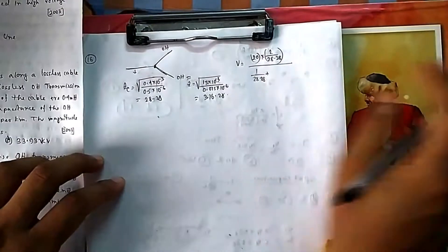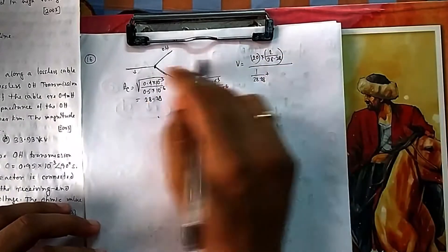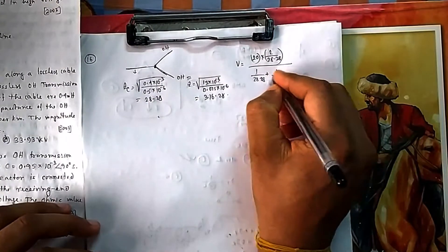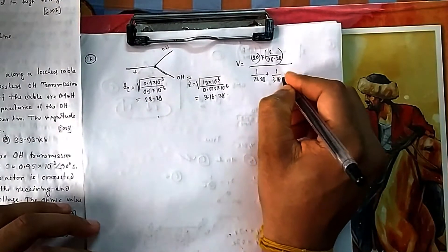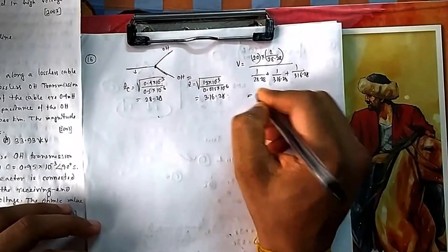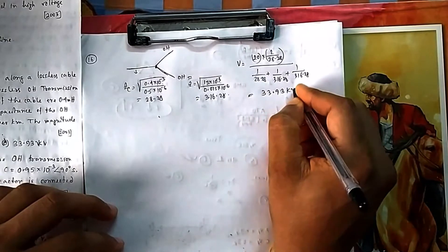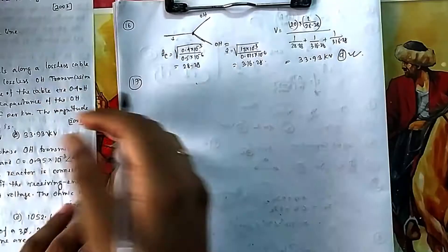There are different cases: terminating with infinite, open line, short line, or terminated with another impedance. Putting in the values with 316.28, you will get 33.93 kV. That is option D.